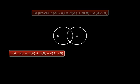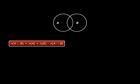And this proves the formula. In fact, let me also give you a special case of this formula. What happens when A ∩ B is empty? That is, sets A and B do not have any common elements. They are disjoint sets.